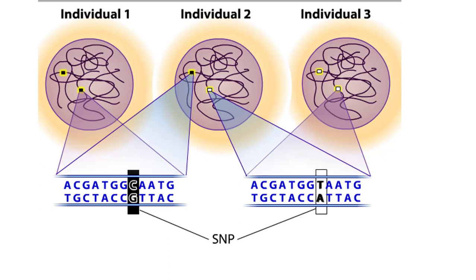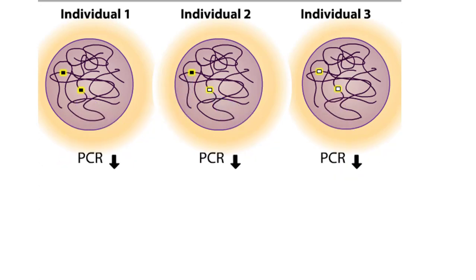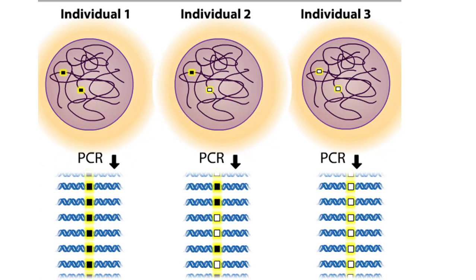Before a researcher can identify the SNPs, the DNA must be copied so that the researcher has enough DNA to work with. The sequences are copied using the polymerase chain reaction, or PCR. The researcher can then either sequence the DNA directly or subject the sample to DNA chip analysis. Here we examine how researchers use DNA chips to identify SNPs.